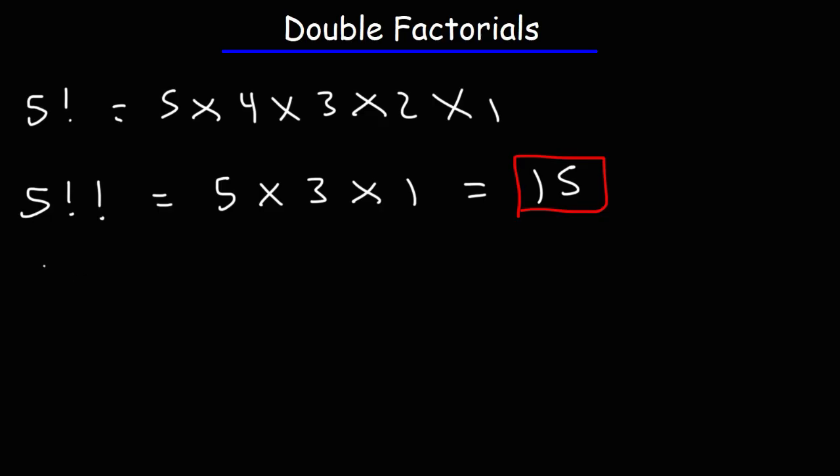Based on that example, what do you think 8 double factorial is equal to? Starting with 8, we're going to multiply each number decreasing by 2. So it's going to be 8 times 6 times 4 times 2.